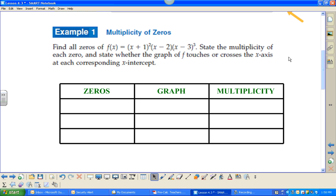Here we have an example. We have x plus 1 quantity squared times x minus 2 times x minus 3 raised to the third power. We're going to list the zeros first. We've got zeros at negative 1, at positive 2, and at positive 3. Now we're going to tell what the graph does.